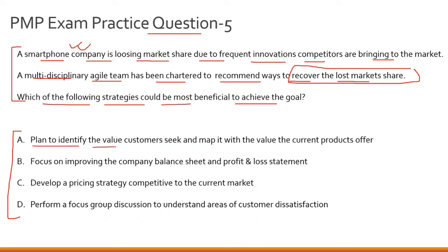Option A: plan to identify the value customers seek and map it with the value the current products offer. This touches the value proposition — a matching of what customers seek with what the current products offer. Let's hold this. Option B: focus on improving the company balance sheet and profit and loss statement. Very broad — having a good balance sheet does not guarantee you will recover lost market share from competitors, so option B is definitely incorrect.